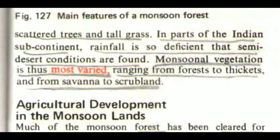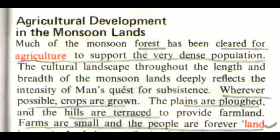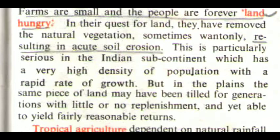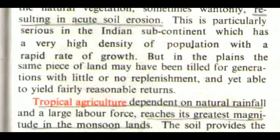Agricultural Development in the Monsoon Lands. Much of the monsoon forest has been cleared for agriculture to support the very dense population. The cultural landscape throughout the monsoon lands deeply reflects the intensity of man's quest for subsistence. Wherever possible, crops are grown; the plains are ploughed and the hills are terraced to provide farmland. Farms are small and the people are forever land-hungry. In their quest for land, they have removed the natural vegetation, sometimes recklessly, resulting in acute soil erosion. This is particularly serious in the Indian subcontinent, which has a very high density of population with a rapid rate of growth.